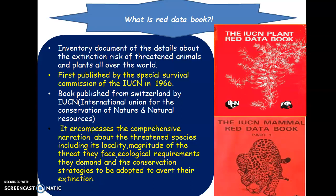Have you heard about the term Red Data Book? The Red Data Book is a public inventory document consisting of details about the extinction of all threatened organisms — that is, threatened animals and plants present all over the world. This book was first published by the Special Survival Commission of the IUCN in 1966, and later published from Switzerland by the same IUCN — the International Union for the Conservation of Nature and Natural Resources.